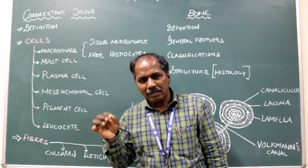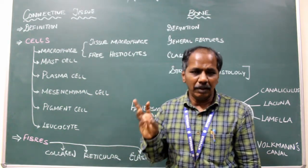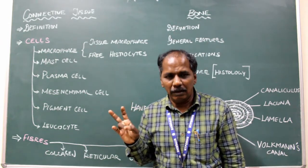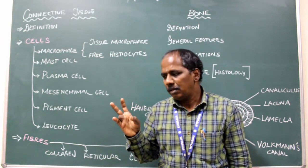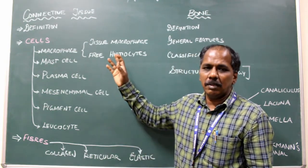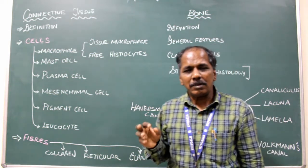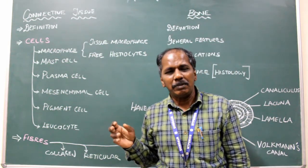Tissue macrophage: It is fixed in an organ, for example, Kupffer cells of liver, alveoli of lungs, spleen and bone marrow. It is present in this organism, whereas free histiocytes are monocytes and neutrophils.